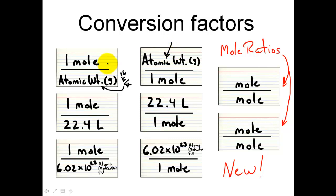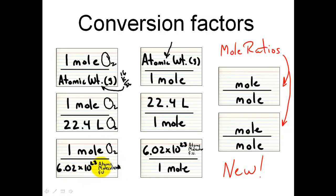Anytime I have one mole of oxygen, I write down one mole of oxygen followed by its weight on the bottom. Likewise, one mole of oxygen will have a volume of 22.4 liters of oxygen. And one mole of oxygen has 6.02 times 10²³ molecules of oxygen. So you do need to be familiar with all our conversion factors.